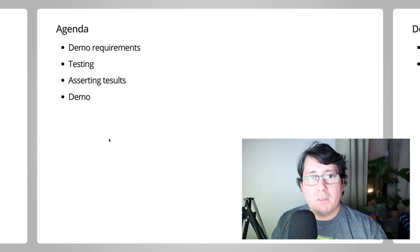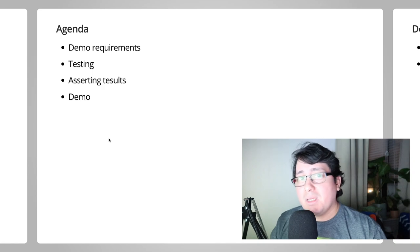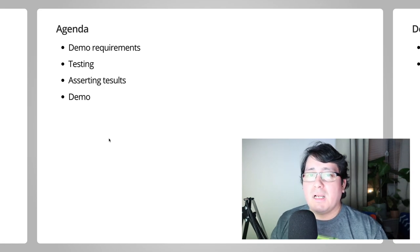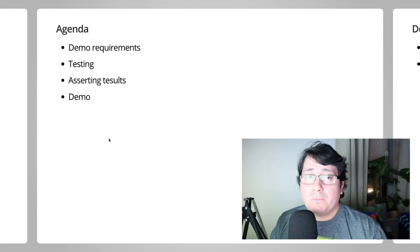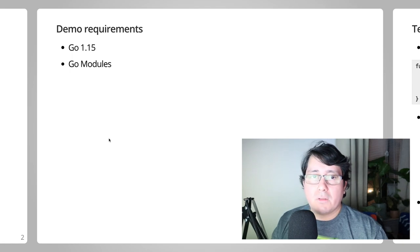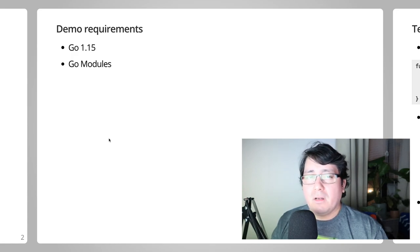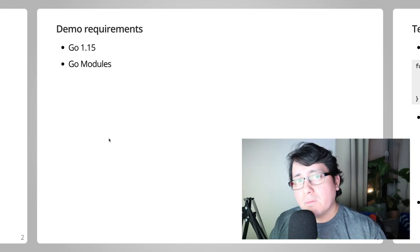The agenda for this episode will consist of four things: the requirements for the demo, what testing means, asserting results, and the actual demo. For the demo we're going to be using Go 1.15 — you can use anything recent, but I recommend at least 1.15 — and you need a basic understanding of Go modules.